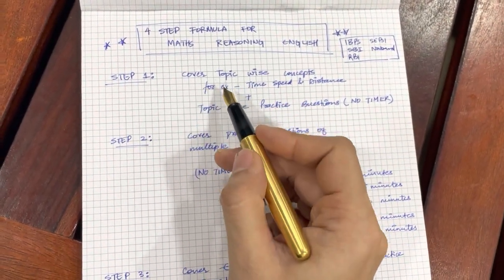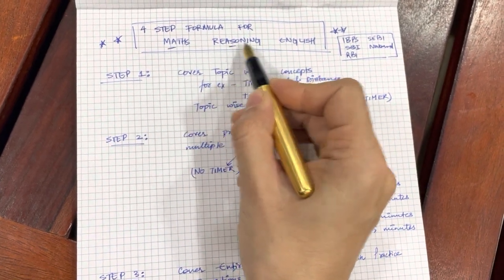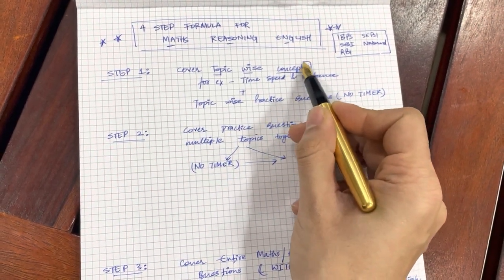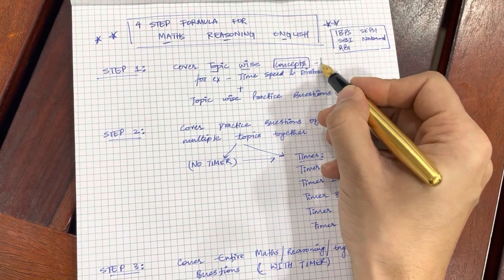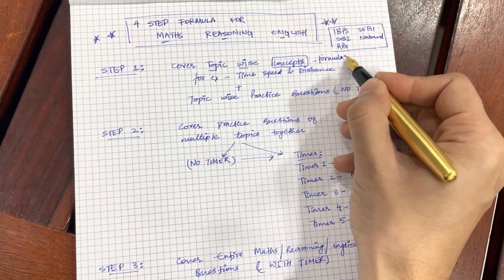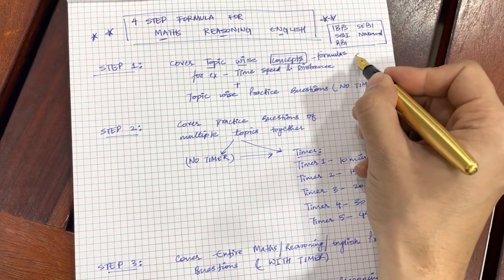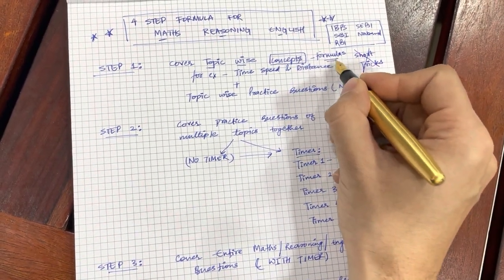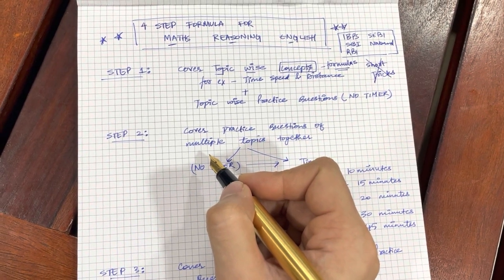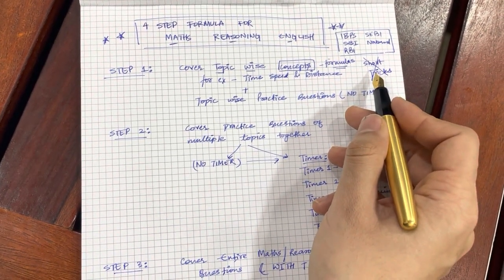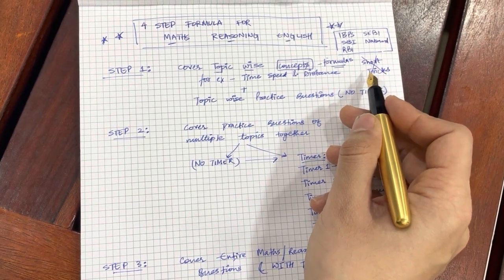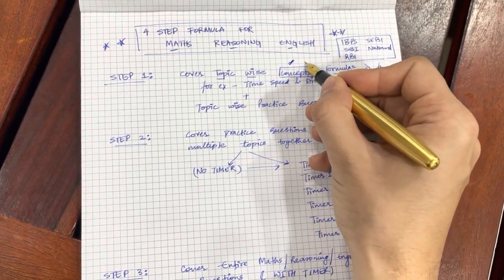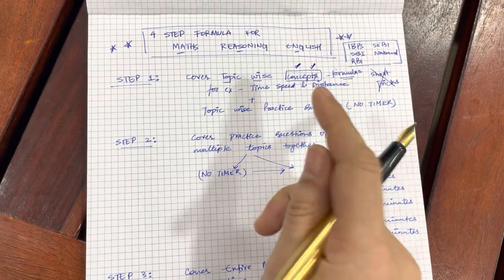Your first step when you are starting with any topic of either Maths or Reasoning or English is to cover topic wise concepts. Your focus here has to be on concepts, on formulas in case of Maths. Please do not jump towards short tricks. What short tricks do if you jump to them is that they affect your conceptual clarity and you do not want that to happen because short tricks can never be universal in nature. They are shortcuts and shortcuts do not provide or confirm success. Therefore, at this stage you have to go through the long route by focusing on the concepts only.